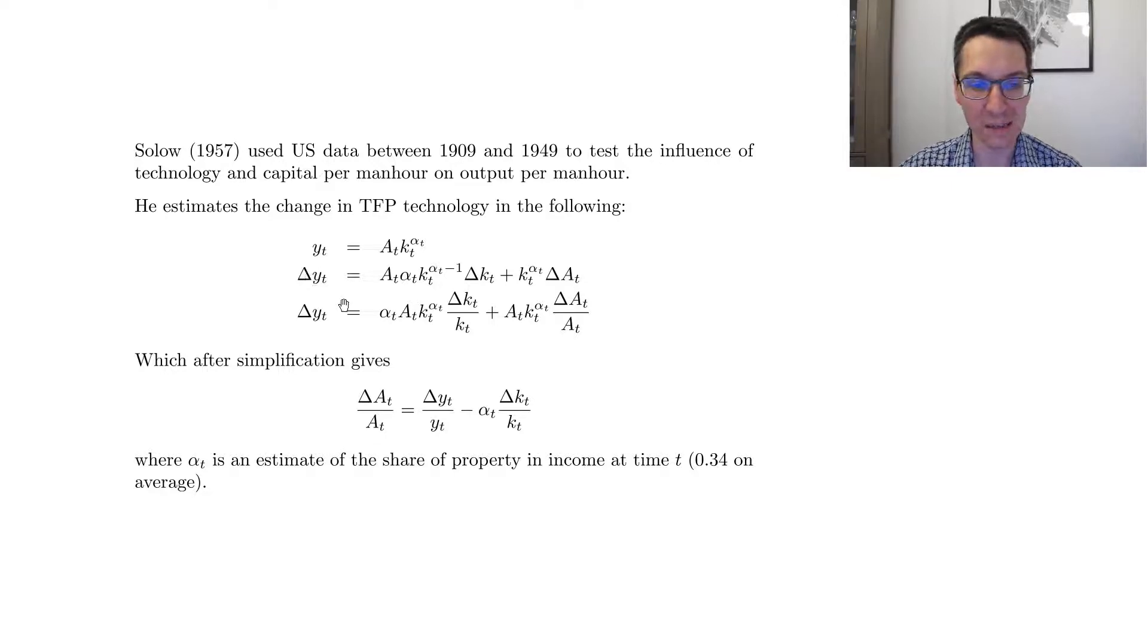So, delta Y_t equals A_t and then the derivative of this part with respect to K_t, so alpha_t K_t to the alpha_t minus 1, and then delta K_t plus the same thing, but now we take the difference of A_t, so K_t to the alpha_t delta A_t. So it really looks like just differencing a product, but he uses discrete changes instead.